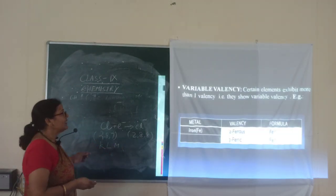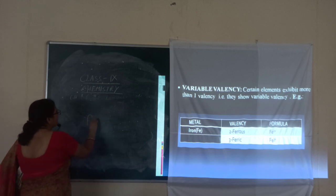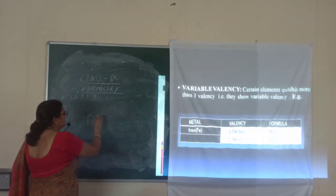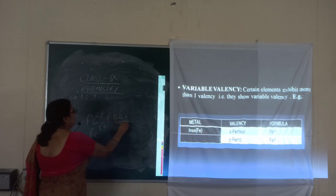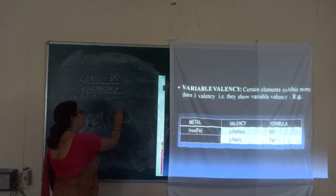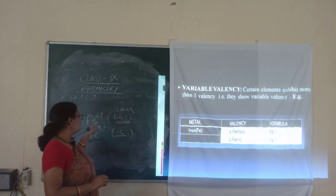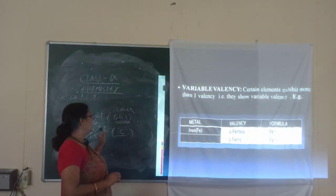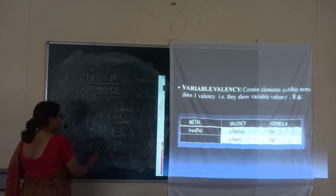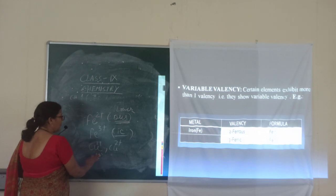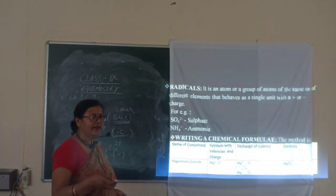And the next one is variable valency — that means so many elements, not all but few of them, are having 2 valencies. For example, Fe2+ and Fe3+, that means ferrous and ferric. You will see the suffix — if it is 'ous', then it is the lower valency, and if it is 'ic', that is the higher valency. These elements are showing variable valency. Like this way, Cu 1+ is cuprous and Cu 2+ is cupric. Similarly, plumbous and plumbic, and so many other elements are there.